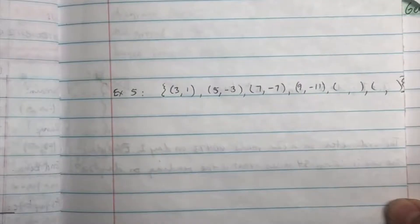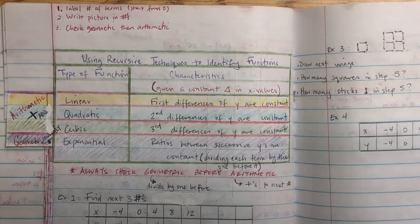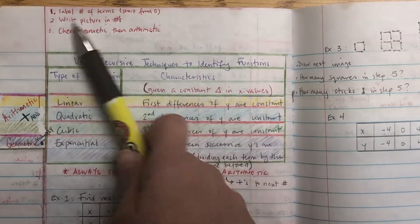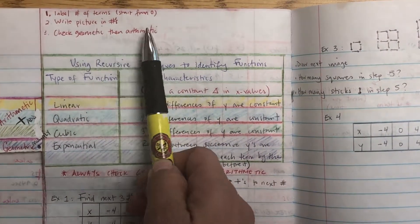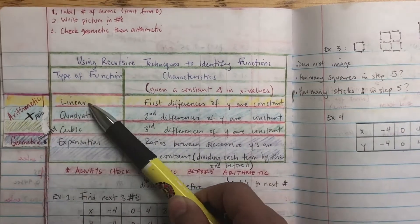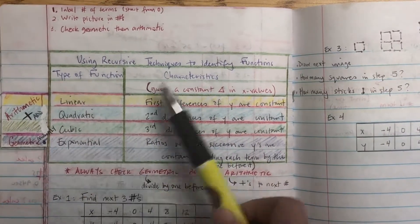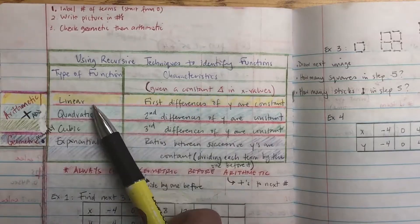Copy that now. And this is a listening check. Do not copy. Example 4. Here's the example 4. Alright, so the first thing is you're going to label the number of terms. You're going to start with 0. If you have any pictures, you're going to write numbers. And you're going to check geometric then arithmetic.